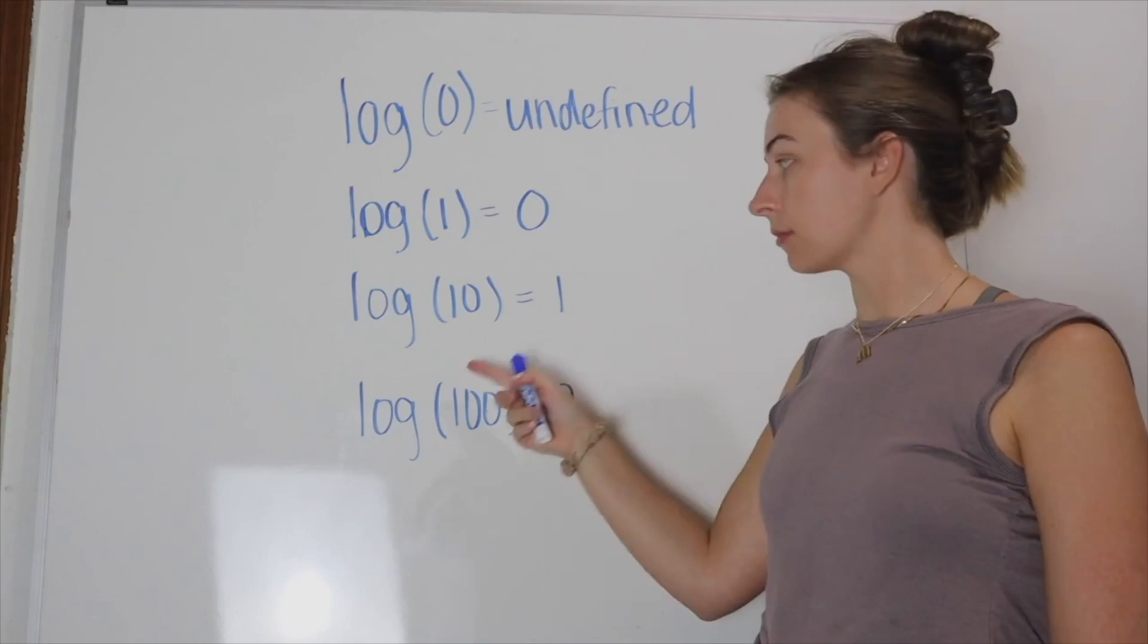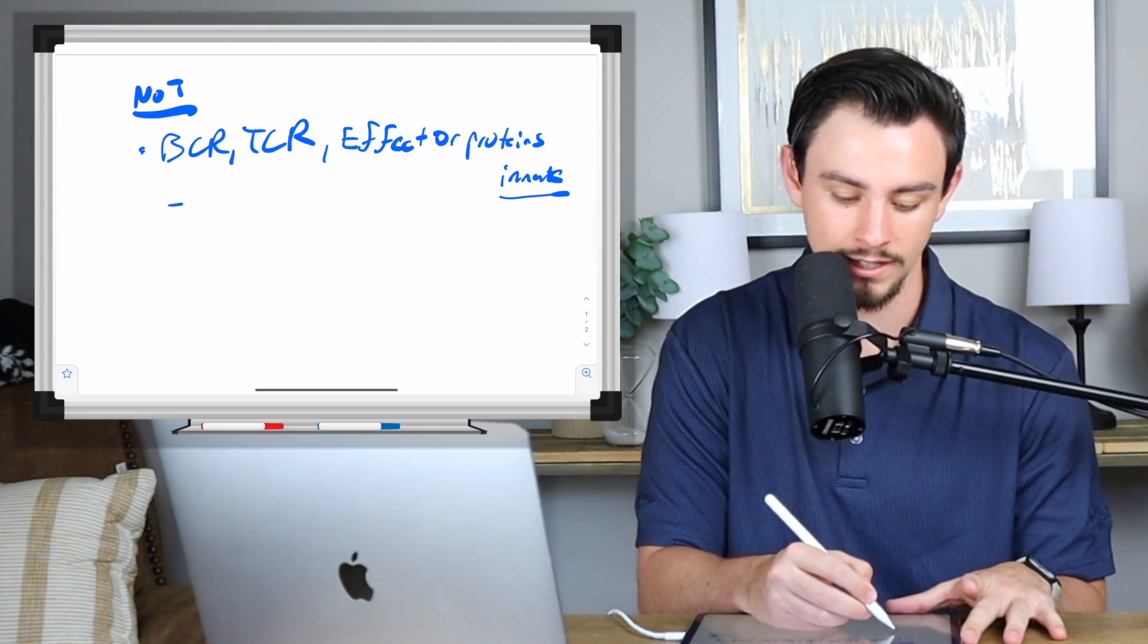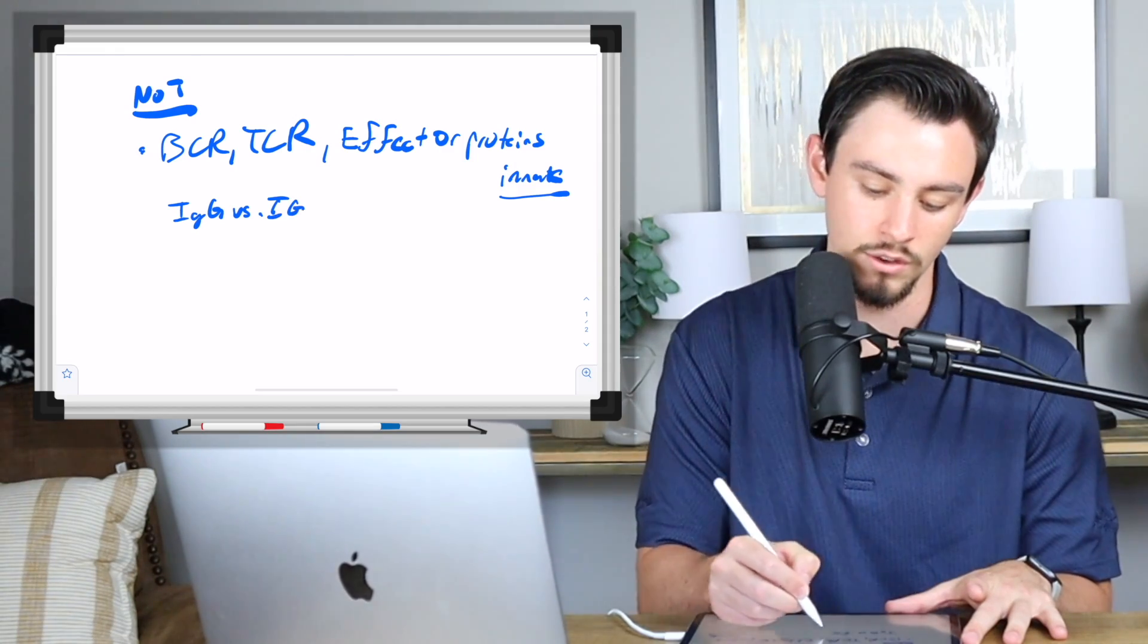Welcome back to another high-yield video. My name is John. I'm going to walk you through the high-yield sciences that are tested on the MCAT and how they're most frequently tested. So I'll show you everything to pay attention to. And today we're going to be talking about, what are we talking about? You see what I did there? We're talking about memory.